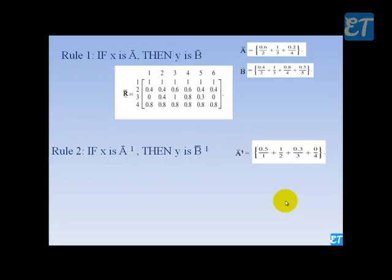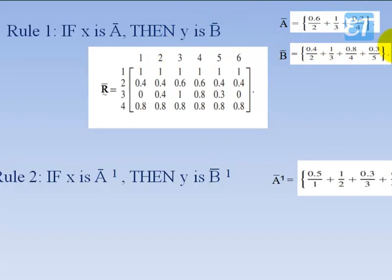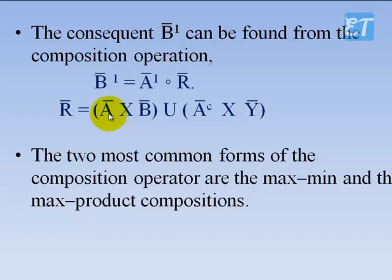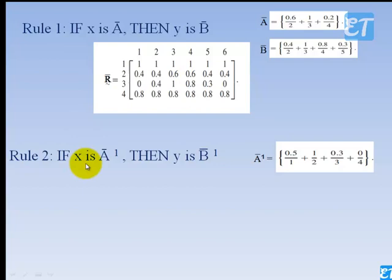Rule 1 says: if X is A, then Y is B. A and B are equal, and we have 6 points. That is A cross B union complement of A cross Y. This R is given. The task is that we need to find the consequent of Rule 2 — that is, if X is A1, then Y is B1.